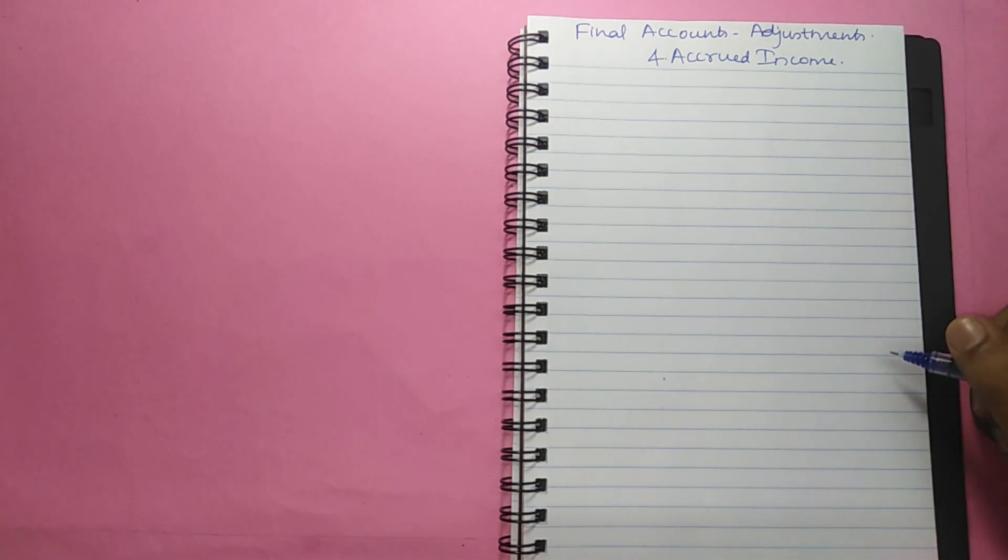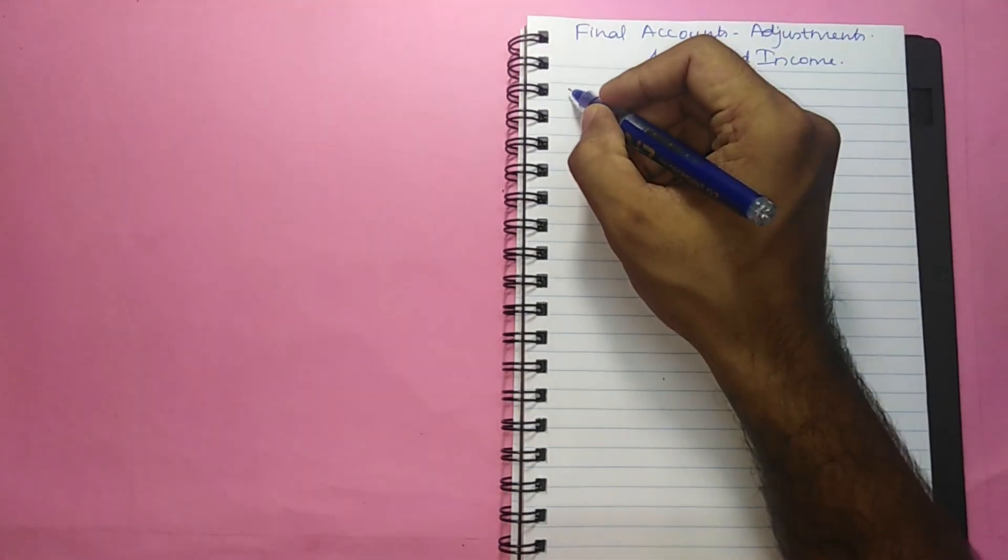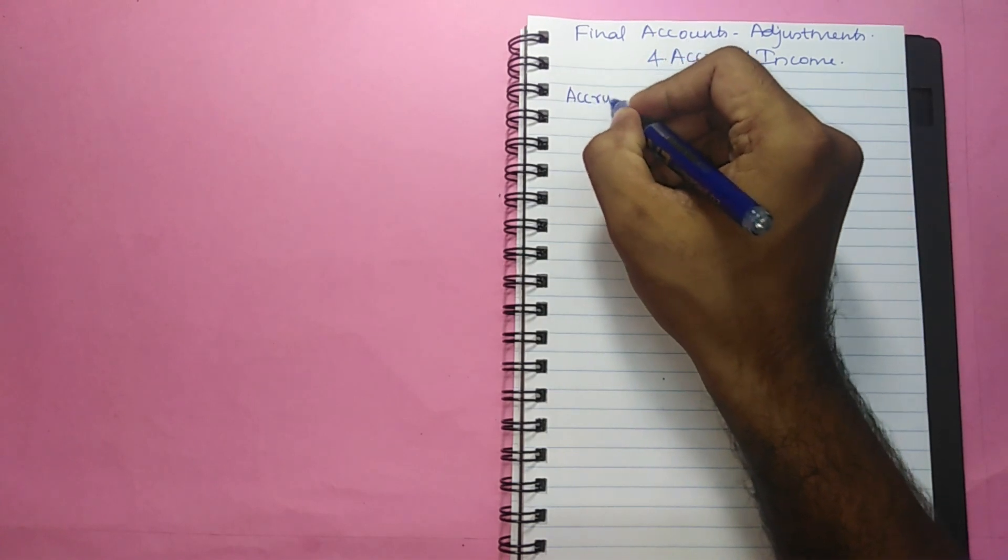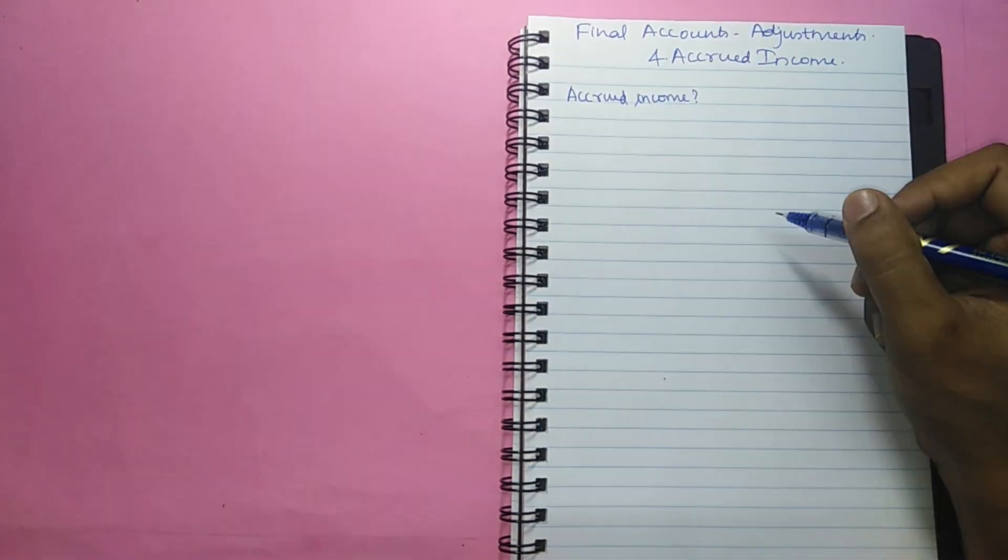First let us learn what is accrued income. There may be situations where certain items of income such as rent, commission, interest on loan, etc. are earned during the current accounting period but have not been actually received by the end of the same period. Such income are known as accrued income.